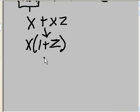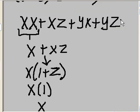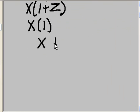One OR'd with z will always give me 1. One OR'd with anything will always give me a 1. x AND'd with a 1 always gives me x. And I now bring down the yx plus yz.